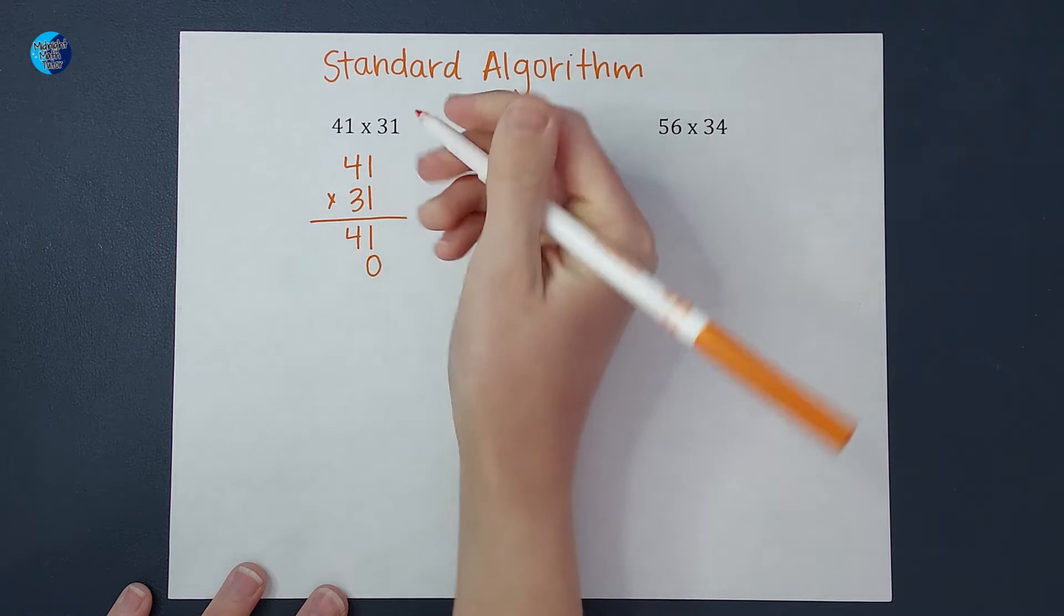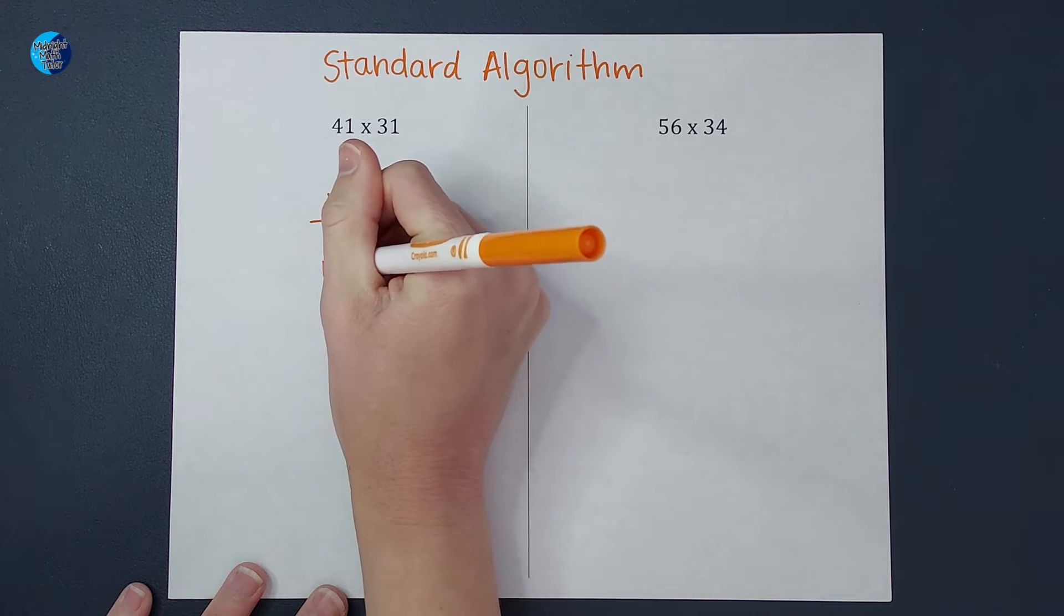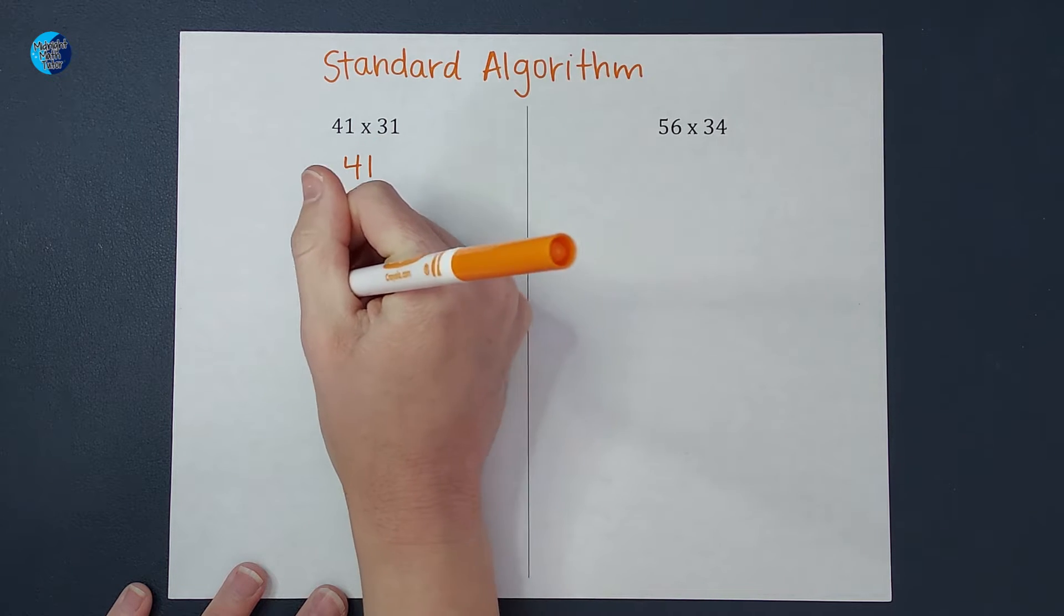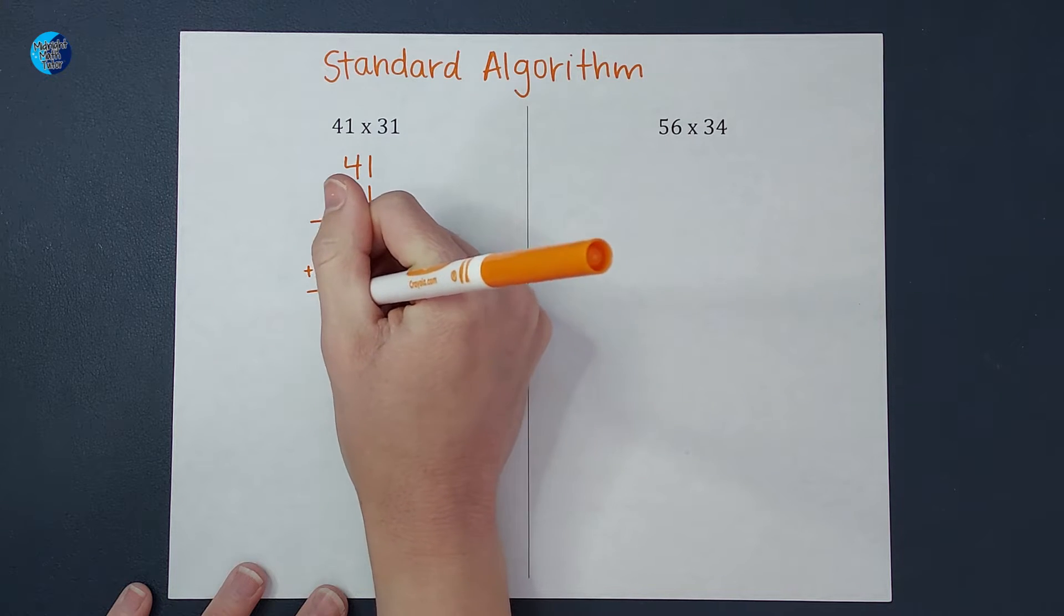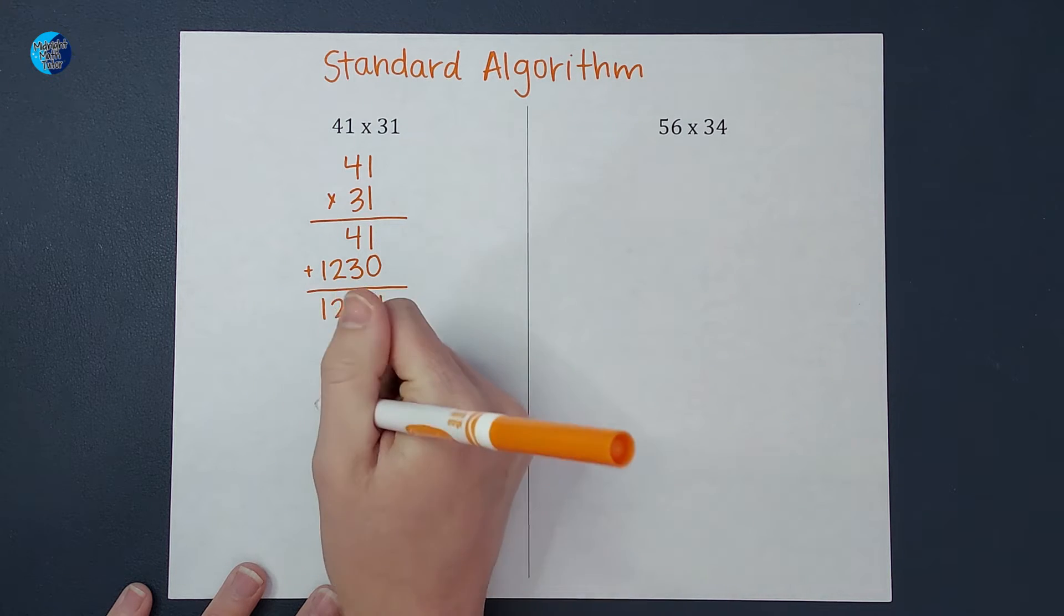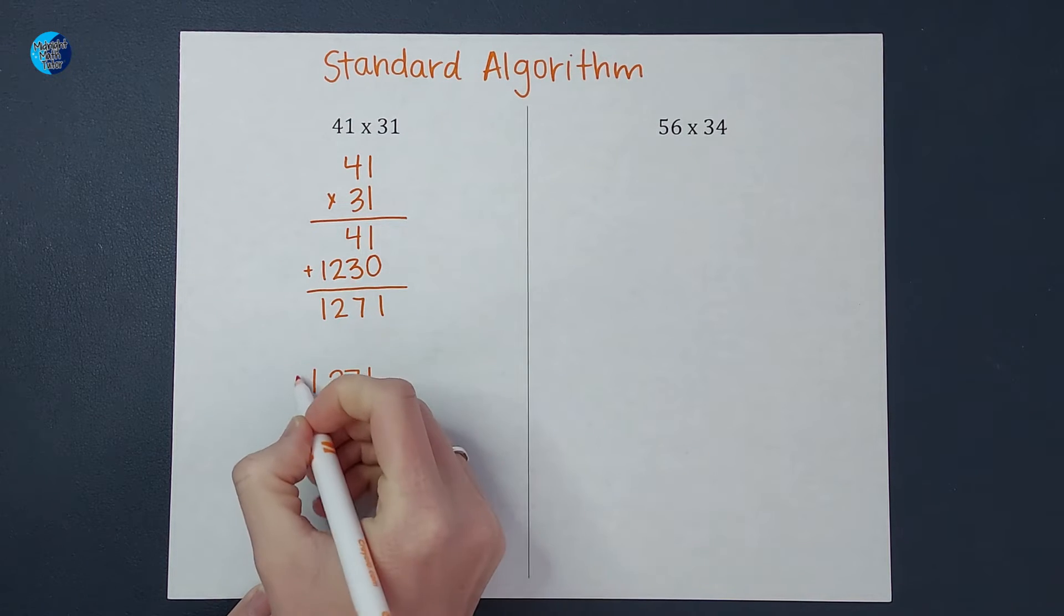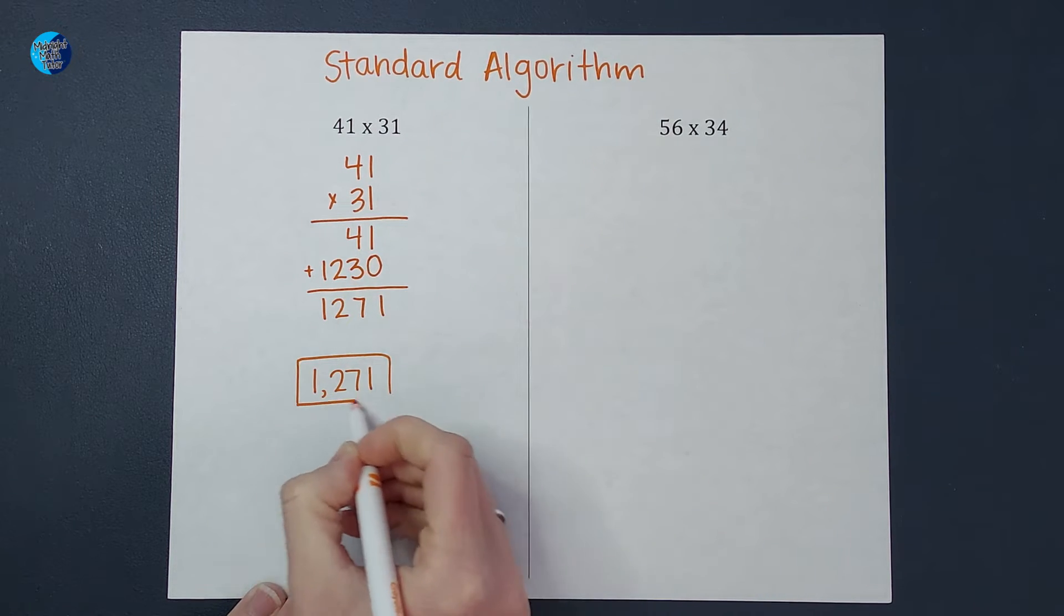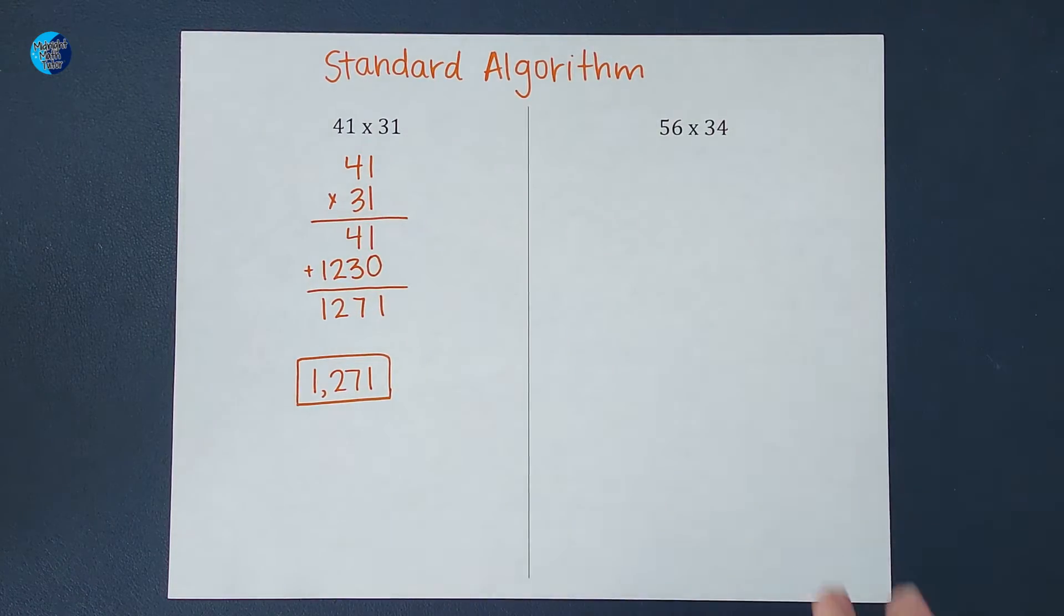Okay, so then 3 times 1 gives me 3. 3 times 4 gives me 12. And then I add these guys and end up with 1,271. All right, there is that one. Now let's look at this next guy.